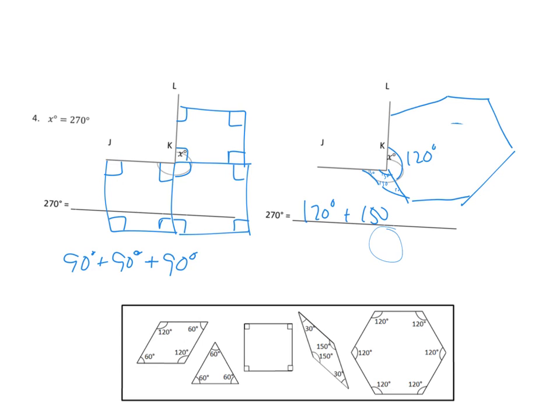So I think if we put a hexagon over here to use up 120 degrees and then we put this odd-looking sort of parallelogram to use up another 150 degrees, that those two would add up to be 270 degrees. So that's another way that we can solve problem number four.